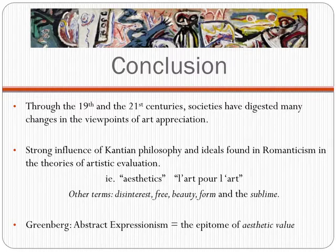Through the 19th and the 21st centuries, societies have digested many changes in the viewpoints of art appreciation. Early 19th century Kantian aesthetic doctrine and the ideals found in Romanticism brought forth ideas of aesthetics, l'art pour l'art, or art for art's sake, and other terms including disinterest, free beauty, form, and the sublime to the forefront of artistic evaluation. Clement Greenberg proclaimed Abstract Expressionism, and Jackson Pollock in particular, as the epitome of aesthetic value. In general, there are three main viewpoints about how we perceive art, separating the idea of an artistic versus aesthetic value of a work of art.